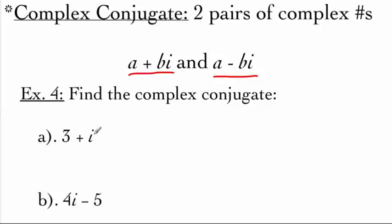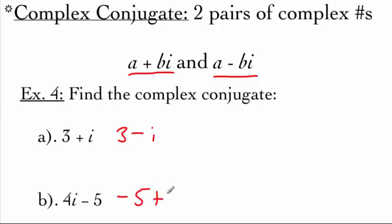In these examples, like part a, it's already written in standard form — 3 plus i. To find its complex conjugate, the a value stays the same, but we change the sign on the imaginary piece. For letter b, it's not quite in standard form, so we flip the a and b values around to get negative 5 plus 4i. Its conjugate is negative 5 minus 4i.